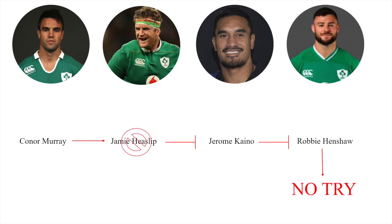Using this network, both singular and double mutant outcomes will be evaluated. In the first example, Jamie Heaslip is not present. As he blocks Kaino from inhibiting Henshaw from scoring, when he is not present, Kaino is still able to inhibit Henshaw, and thus no try is scored.